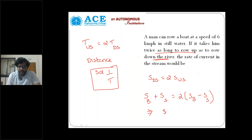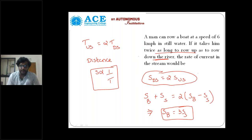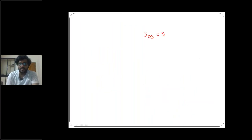The link here is speed of boat is equal to thrice speed of stream. Whenever downstream speed is twice upstream speed, definitely speed of boat equals thrice speed of stream. For example, when speed of downstream is thrice speed of upstream, then definitely speed of boat equals four times speed of stream. If the ratio is three, here we will get four. Remember that.